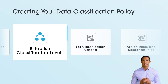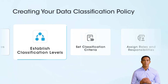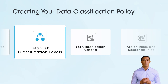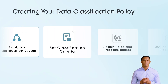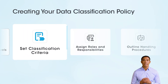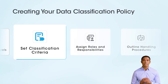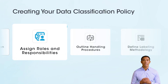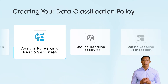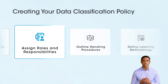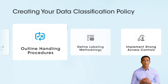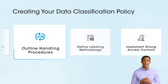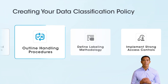Define well-structured classification levels based on sensitivity, business value, and regulatory requirements, providing clear guidelines and examples for each category. Develop specific criteria for assigning data to classification levels, using decision trees or flowcharts to aid in consistent classification decisions. Clearly define and assign roles such as data owners, data custodians, and data users, ensuring accountability and promoting a culture of data stewardship. Detail handling procedures for each classification level, covering access controls, storage, transmission, and disposal protocols to ensure consistent data management.